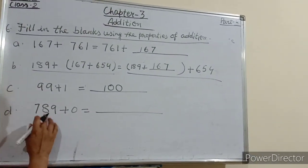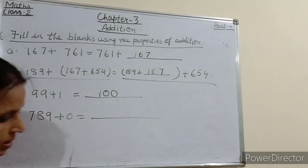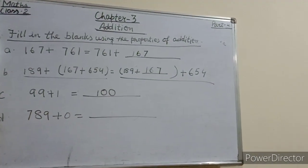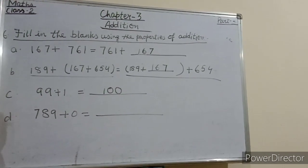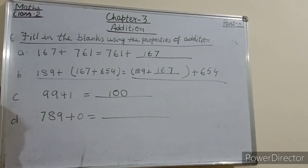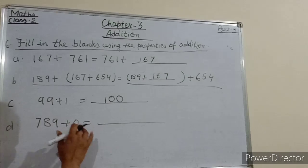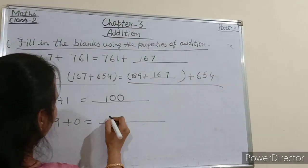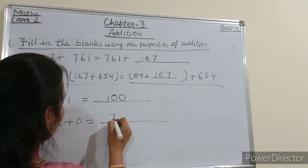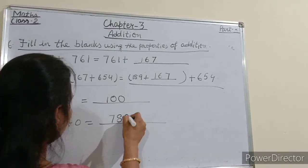Now 789 plus 0. Tell me students, what will be the answer? Yes — if 0 is added to any number, the sum is the number itself. So here it will be 789.